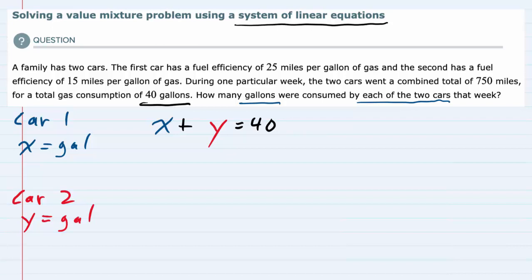Looking back into the problem again, we see that the total miles is 750. I'm going to have a second equation where the total number of miles is 750. To find out the number of miles that the first car goes, we know that it gets 25 miles per gallon, and x is the number of gallons that it uses.